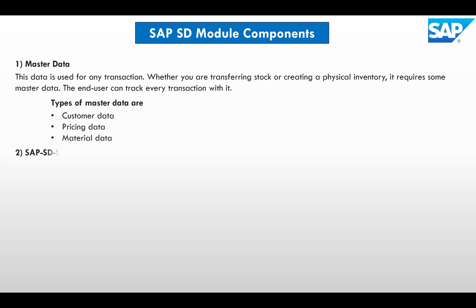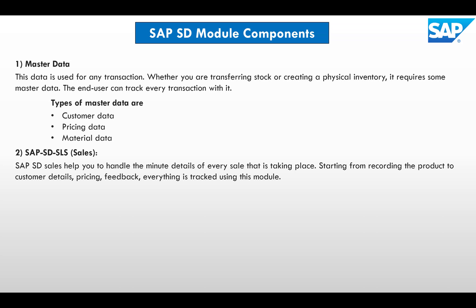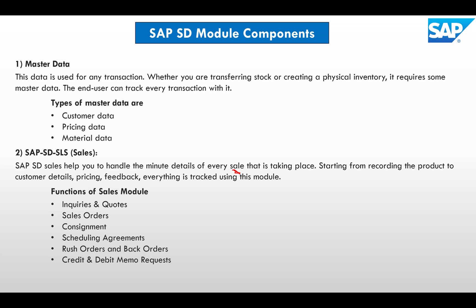The next component is Sales Data. SAP Sales Data helps to handle the minute detail of every sale that is taking place — from recording the product to the customer, pricing, feedback — everything is handled using this module. The major functions of the SAP Sales module include creating inquiry documents, sales orders, consignment, scheduling agreements, rush orders, and credit and debit memos.